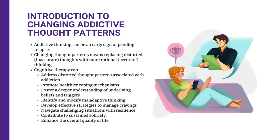Ambivalence and resistance often stem from a distorted thought process. This also ties in with behaviors encompassing both high-risk behaviors linked to active addiction and healthy behaviors associated with one's recovery journey. Cognitive therapy can help prevent relapse and improve long-term recovery outcomes by addressing distortive thought patterns, promoting healthier coping mechanisms, and fostering a deeper understanding of the underlying beliefs and triggers associated with addictive behaviors. Through the identification and modification of maladaptive thinking, individuals undergoing CBT for addiction treatment can develop effective strategies to manage cravings, navigate challenging situations, and build resilience, ultimately contributing to sustained sobriety and an enhanced quality of life.